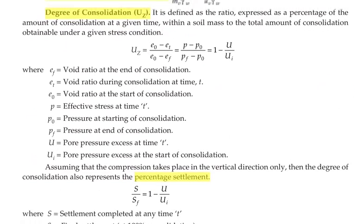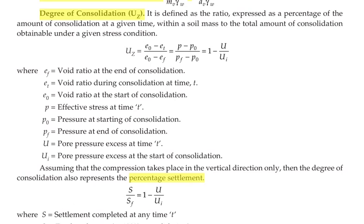Next we are going to see degree of consolidation U. It is the ratio, expressed as a percentage, of the amount of consolidation at a given time within a soil mass to the total amount of consolidation obtainable under a given stress condition. The formula is U = (E0 − ET) / (E0 − EF), or (P − P0) / (PF − P0), or 1 − (U / UI), where EF is the void ratio at end of consolidation, ET is the void ratio during consolidation at time T, E0 is the void ratio at the start, P0 is the pressure at start of consolidation, PF is the pressure at end of consolidation, U is the excess pore pressure at time T, and UI is the excess pore pressure at start of consolidation.